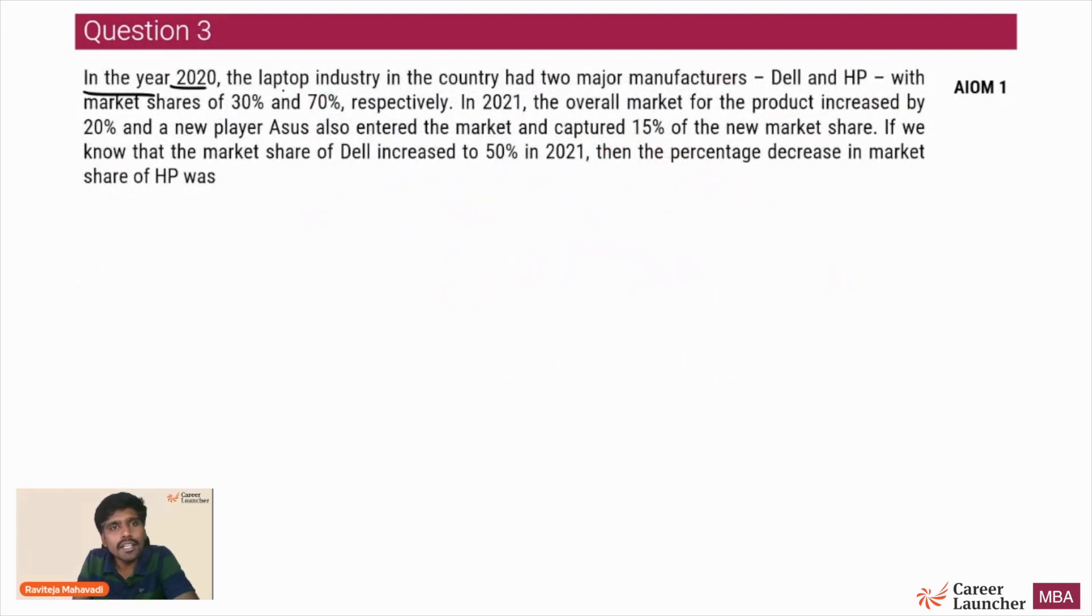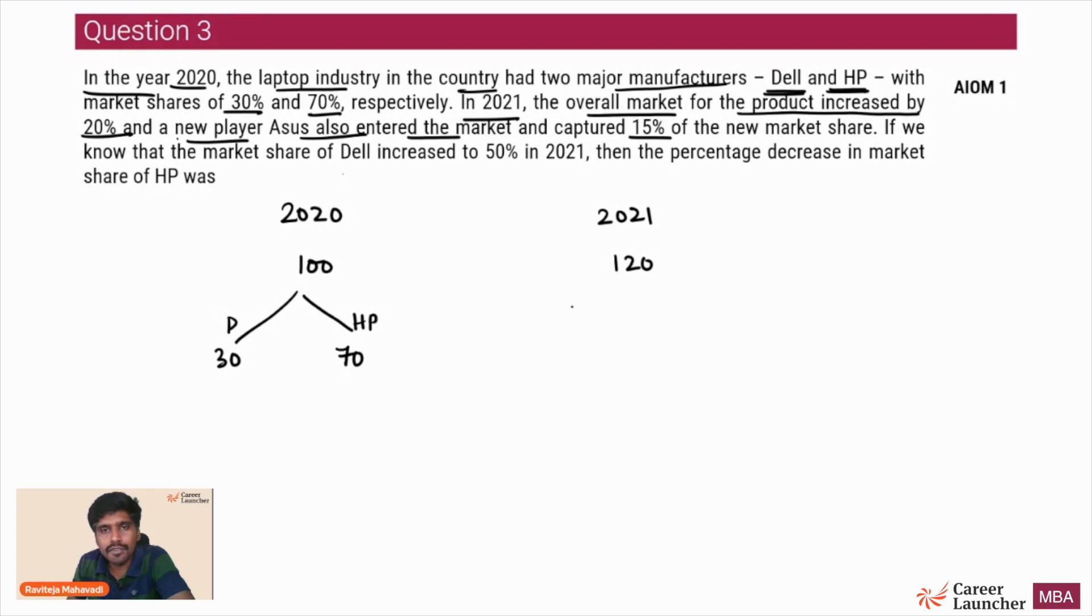Question 3. In the year 2020, the laptop industry in the country had two major manufacturers. This question looks wordy, looks verbal. Let's see if it has that kind of stuff. There are only two manufacturers in 2020. If there were 100 laptops sold, there are two manufacturers Dell and HP with market shares of 30 and 70. In 2021, the overall market for the product increased by 20%. That means there will be 120 laptops being sold in 2021. A new player Asus entered the market and captured 15%. Asus is there, Dell will be there, and HP will be there.